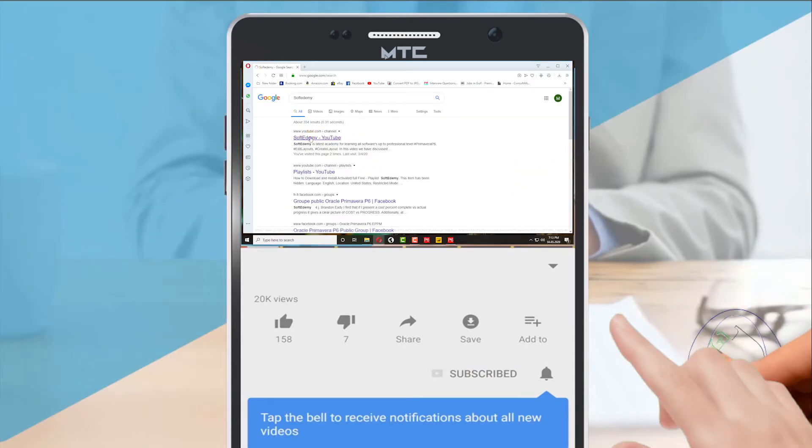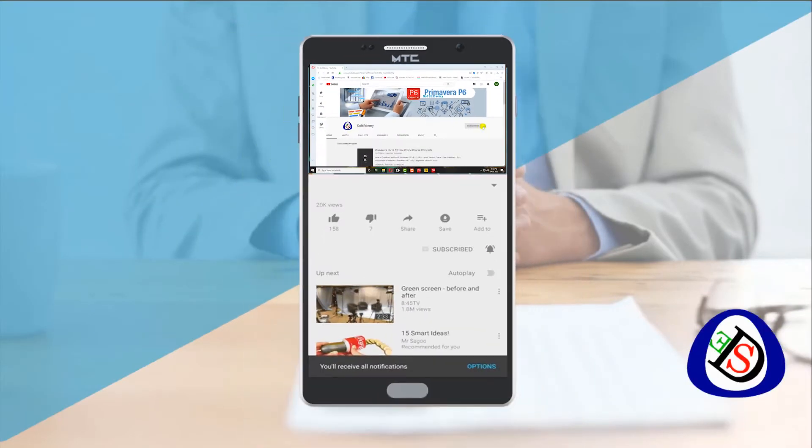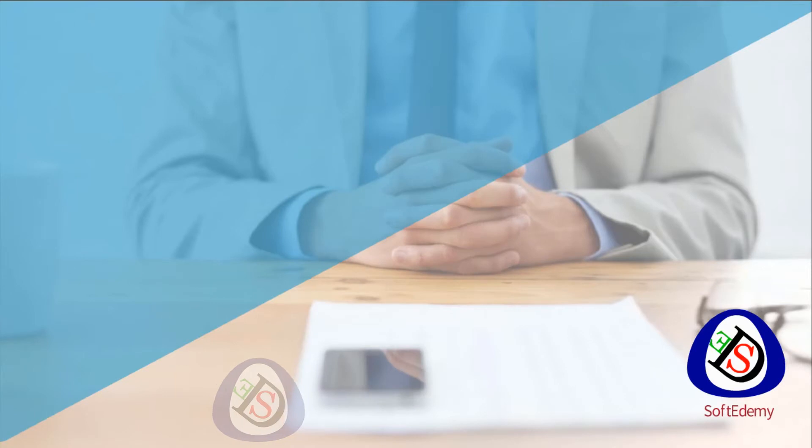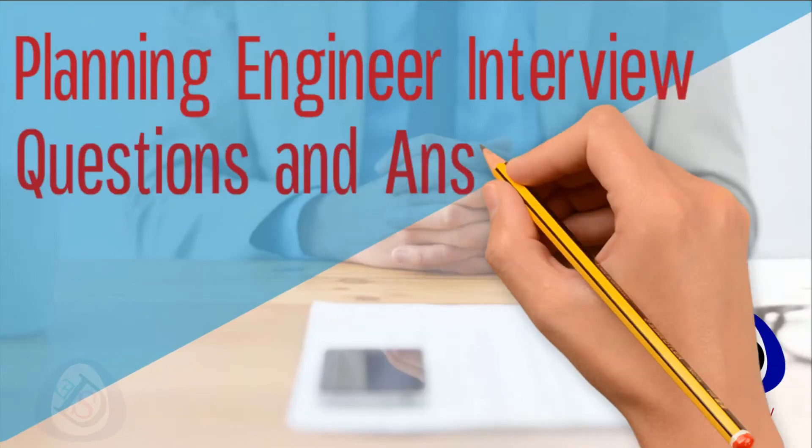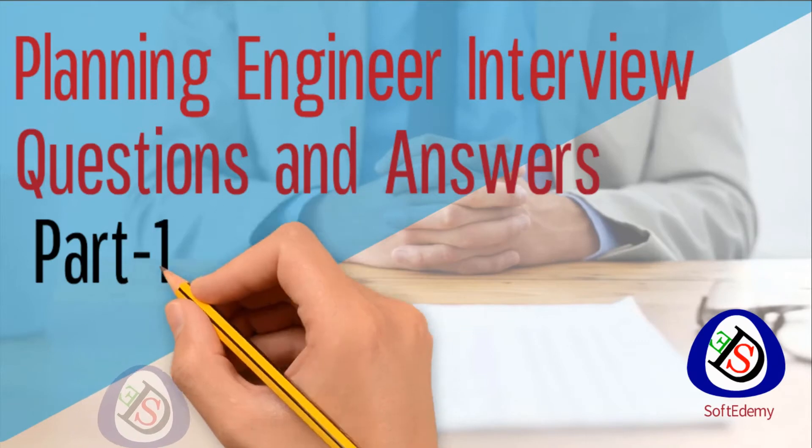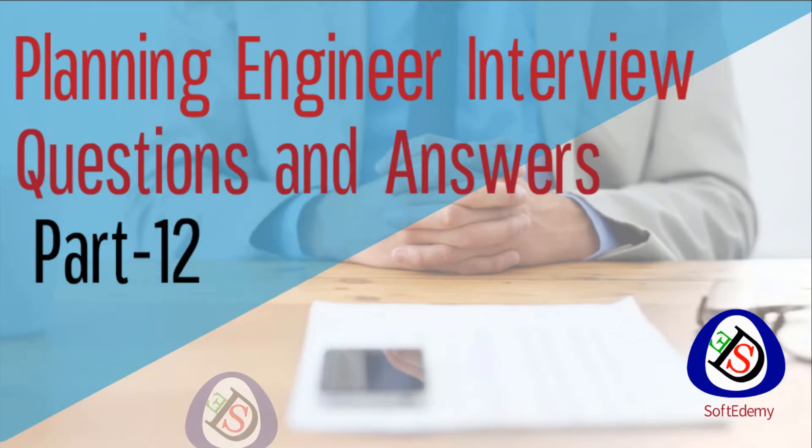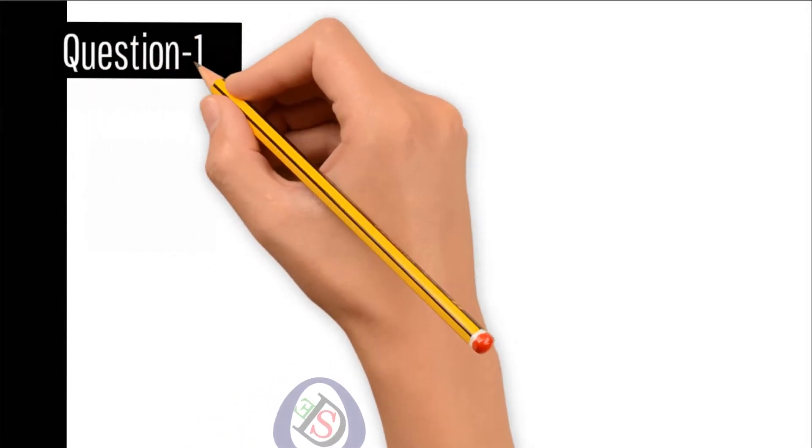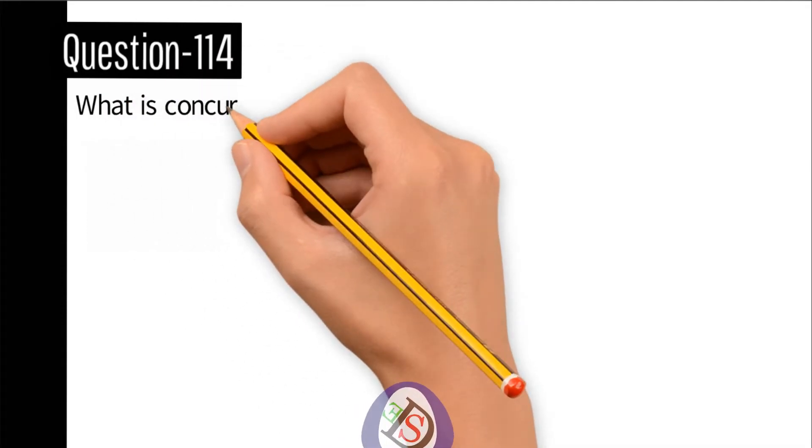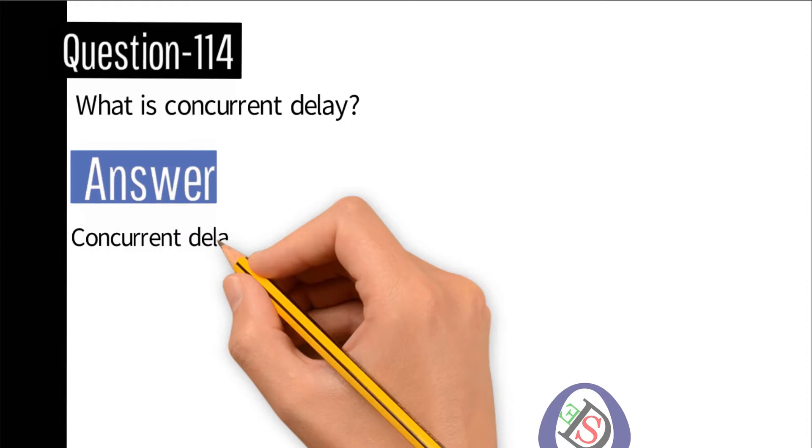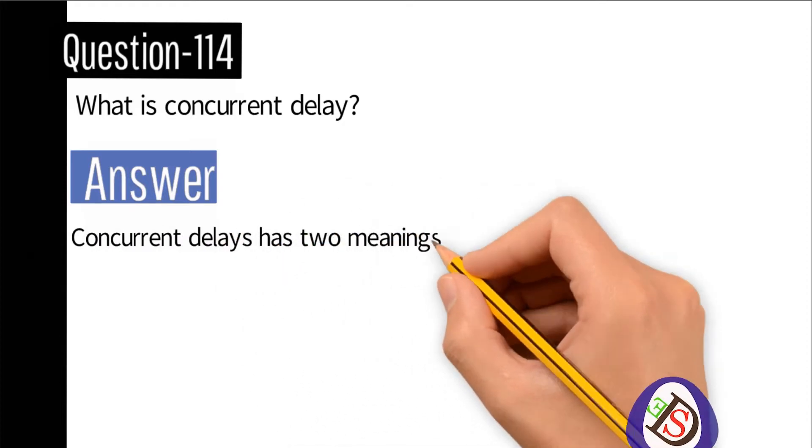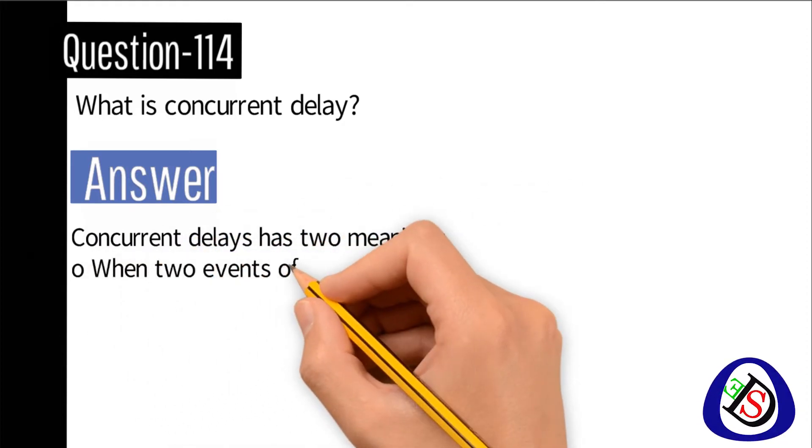Welcome viewers to Software Demi, a Software Engineering Academy. You are watching Planning Engineers Interview Questions and Answers, Part Number 12. Question number 114: What is concurrent delay? Answer: Concurrent delays has two meanings. One: when two events of delay on critical path are occurring at the same time.